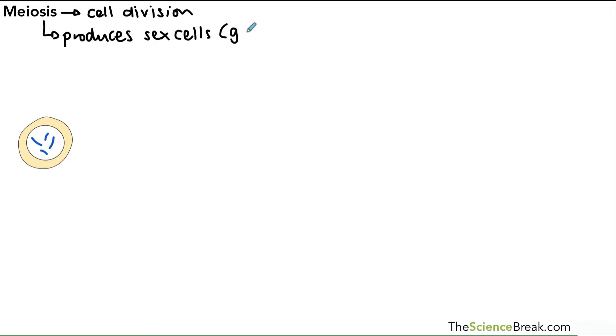The sex cells - the keyword you must remember for sex cells is gametes. Gametes would be sperm cells and egg cells in animals. If you're talking about plants, the equivalent of a sperm cell in a plant is pollen, and plants also have egg cells as well.